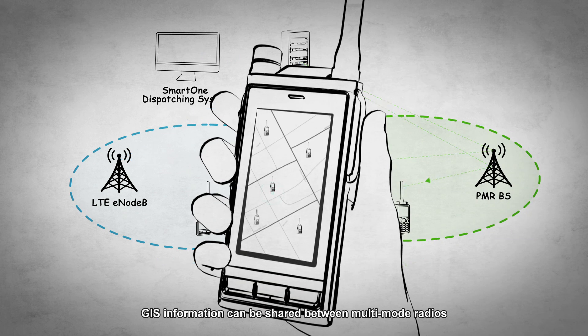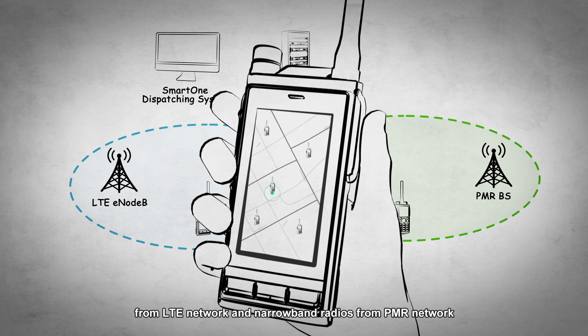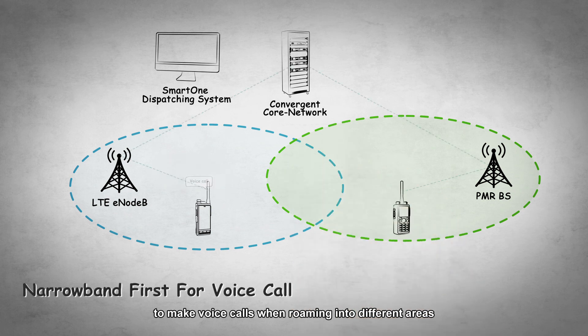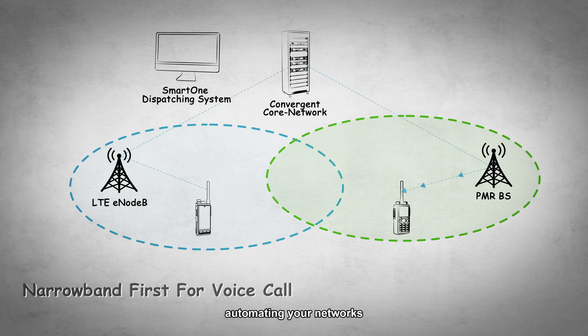GIS information can be shared between multi-mode radios from LTE network and narrowband radios from PMR network. And the same dialing rules are followed to make voice calls when roaming into different areas, automating your networks.